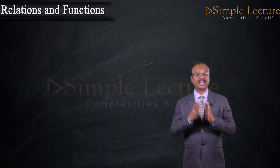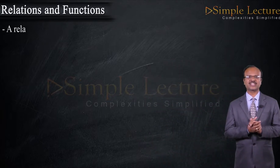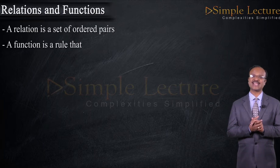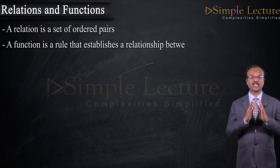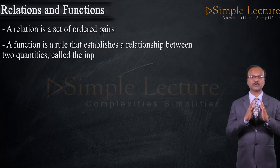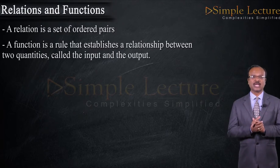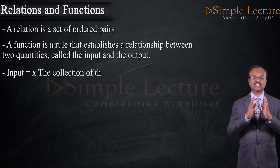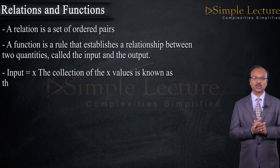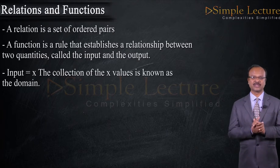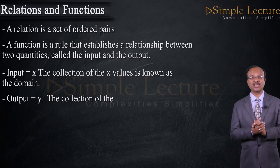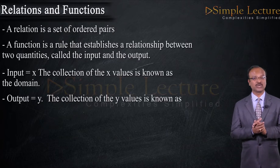Now, what is a relation? A relation is a set of ordered pairs. Then what is a function? A function is a rule that establishes a relationship between two quantities called the input and the output. If we denote input as x, then the collection of all the x values is known as the domain, and if we denote the output as y, the collection of all the values of y is known as the range.